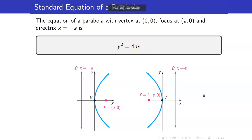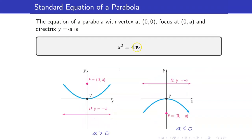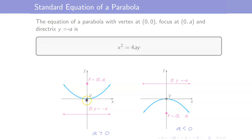How do we determine whether our parabola is opening sideways or upwards or downwards? All you have to do is look at the variable whose exponent is equal to 1. If the exponent of x is 1, the axis of symmetry is along the x-axis, so the parabola is opening sideways. If the variable with exponent 1 is y, the axis of symmetry is along the y-axis.